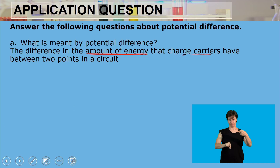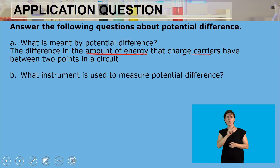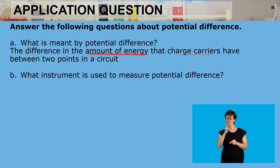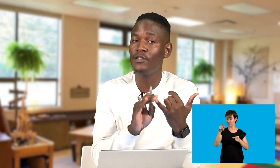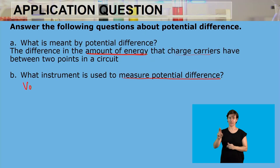The second question asks: what instrument is used to measure potential difference? We need to remember that in an electric circuit, we have an ammeter that is used to measure current. Current is measured in amps, denoted by capital letter A. Potential difference is measured by the instrument called a voltmeter.